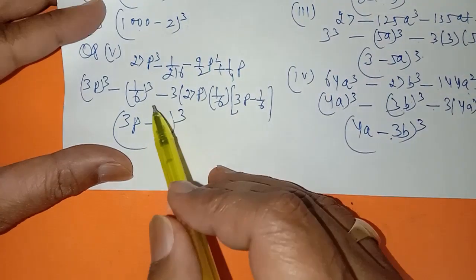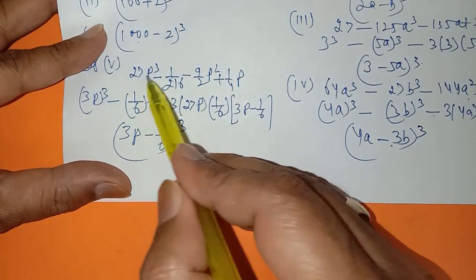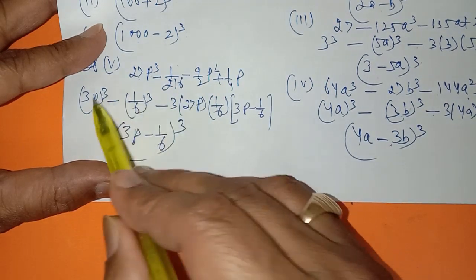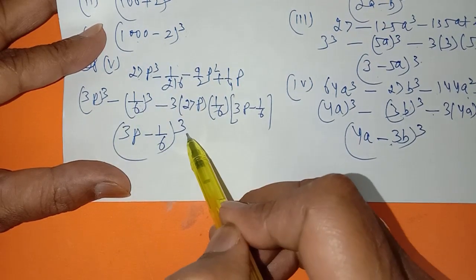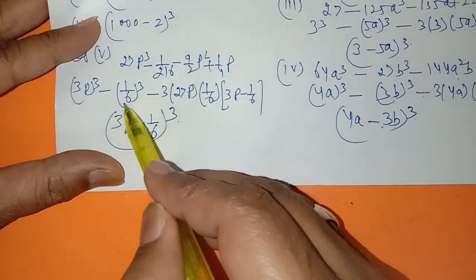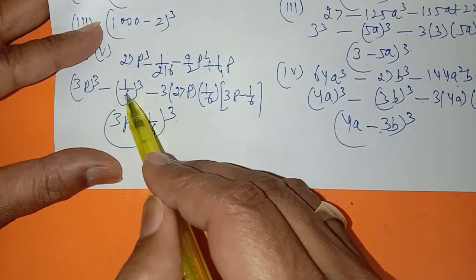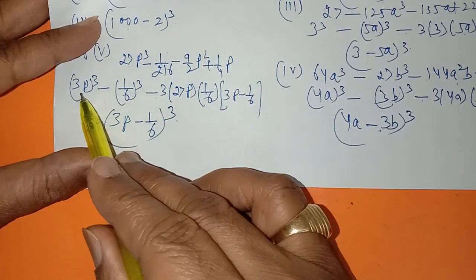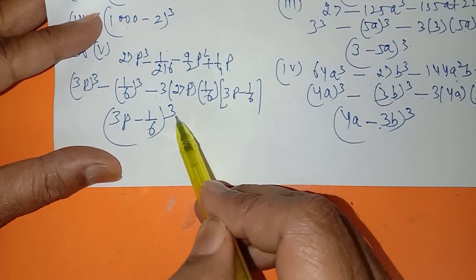In the fifth part of question number 8: this is (3p) whole cube and this is (1/6) whole cube. From these two terms it is clear this will be the (3p minus 1/6) whole cube. But you must write the middle term: (3p)³ minus (1/6)³ minus 3 into a into b, with bracket (a minus b). So it becomes (3p minus 1/6) whole cube.